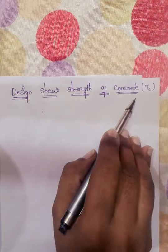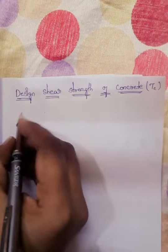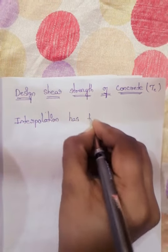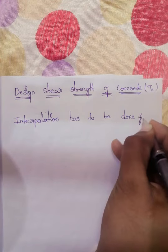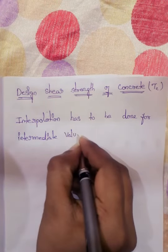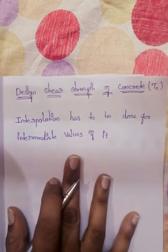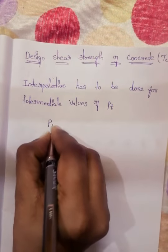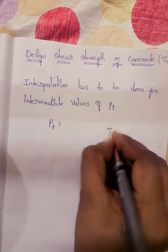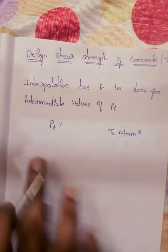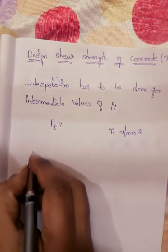Interpolation has to be done for intermediate values of PT — intermediate values which are not directly given in Table 19. If we want the tau_c for in-between values, we need to do interpolation. Write PT and tau_c in newton per mm squared. Suppose we explain with one example to find tau_c for a required PT value.